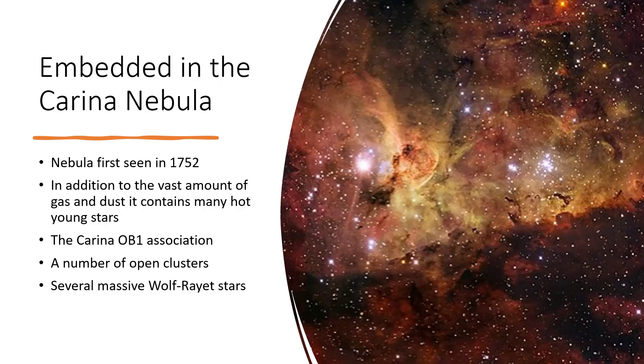You've got the Carina OB1 association. An OB association is a collection of O and B class stars, the biggest type of main sequence stars, the blue hot giant stars. There's a number of open clusters you can see one to the middle left and another to the middle right of the image, and several very powerful Wolf-Rayet stars.